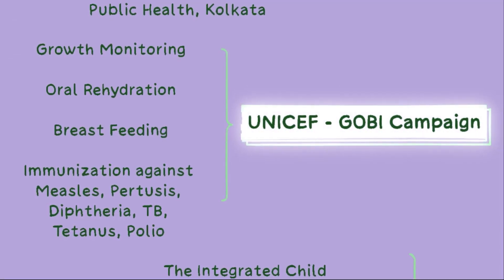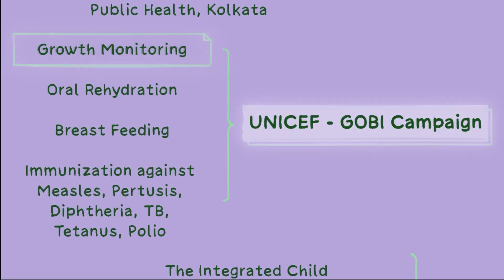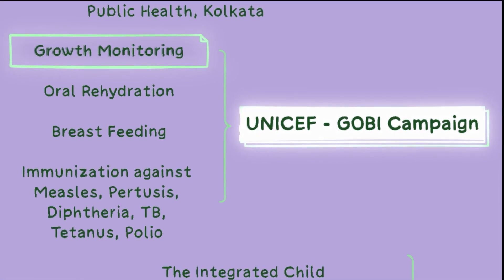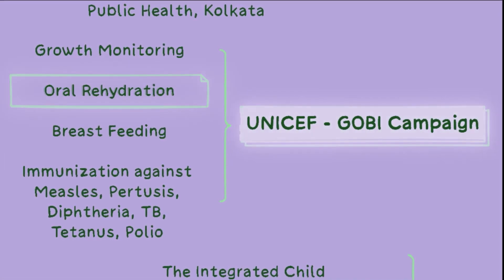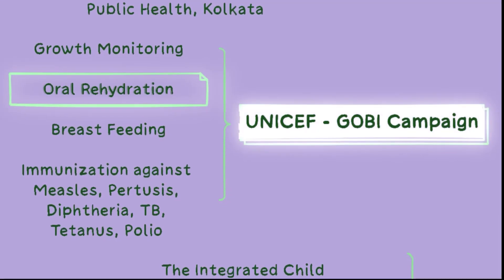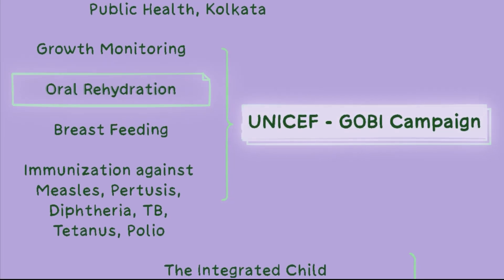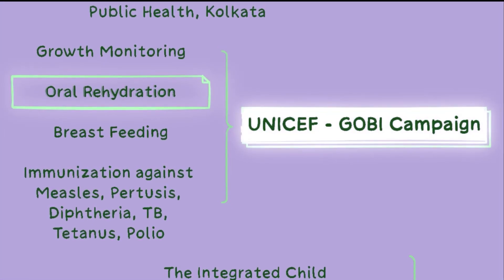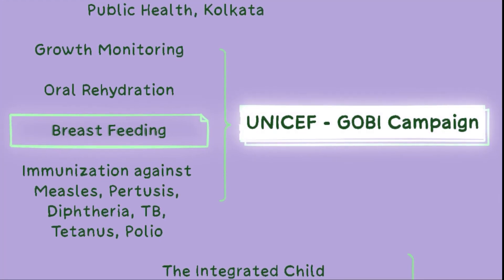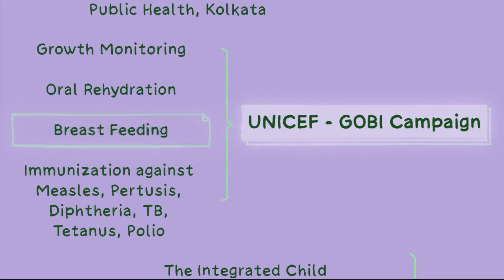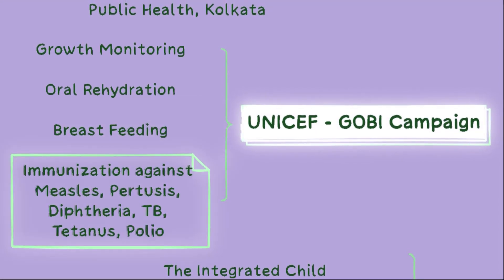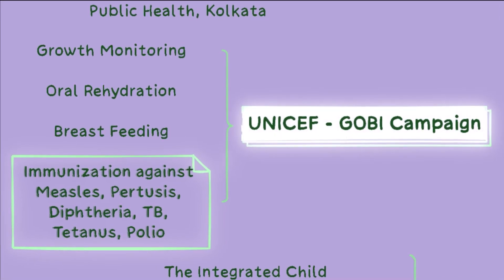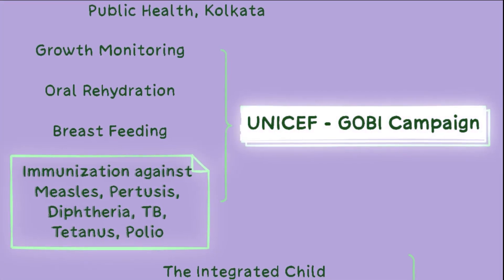The components of the GOBI campaign were: firstly, regular monitoring of a child's growth through weight and height measurements to detect and address malnutrition and growth faltering at an early stage; secondly, promotion and distribution of Oral Rehydration Solution, a simple and cost-effective treatment for diarrhoea to prevent dehydration and reduce child mortality; thirdly, encouragement and support for exclusive breastfeeding during the first six months of a child's life; and lastly, immunization — promotion and provision of vaccines to protect children against measles, pertussis, diphtheria, tuberculosis, tetanus, and polio.